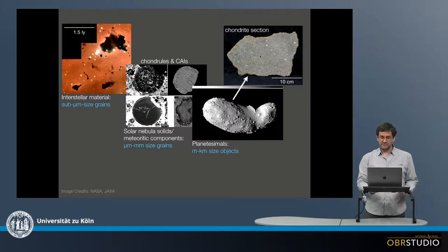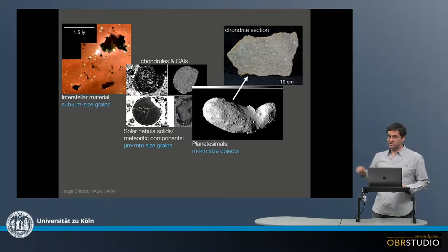So here is a section of a chondrite in which we can see small, differently-colored grains, which are mainly chondrules here, because this is an ordinary chondrite which consists mainly of chondrules.